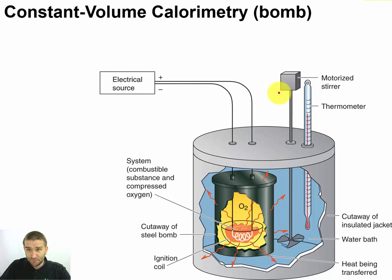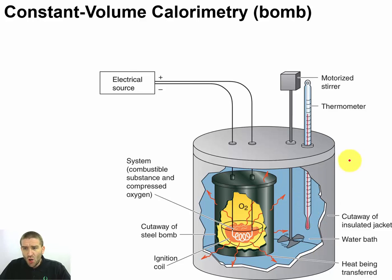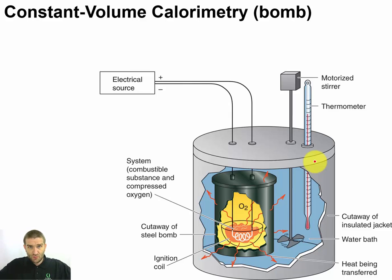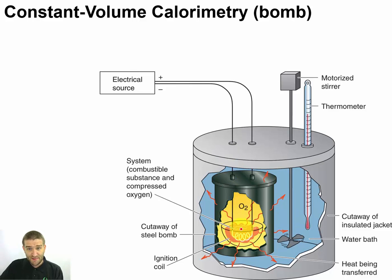Now let's take a look at how that's set up. We have a thermometer so we can measure the change in temperature before and after our reaction occurs. We have a motorized stirrer to make sure the water bath is homogenized so temperature is uniform throughout. The outside will be an insulated jacket, cutting off the system and the surroundings from the rest of the universe. We light it electronically, since we can't stick matches inside this system — we just have a little electrical signal.